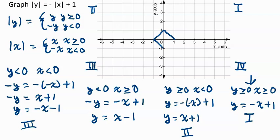For the third quadrant, that's a negative slope with a y-intercept at negative 1. Finally, in the fourth quadrant, y is negative but x is greater than or equal to 0, giving us y equals x minus 1 — positive slope, y-intercept negative 1.